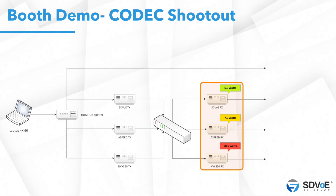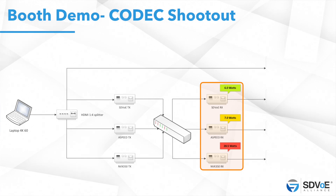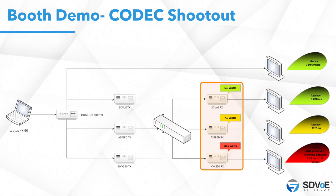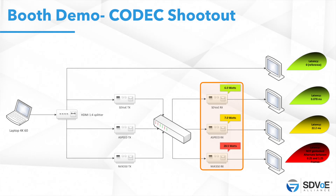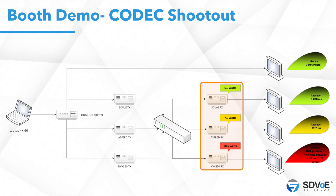We also measured latency for complete encoding. The reference is obviously zero. SDVoE is 0.078 milliseconds, which is blazing fast. For A-Speed, it's much more — 22.2 milliseconds. And Crestron is not a genlock solution, so they have not been capable of reestablishing the source timing at the screen. Their latency varies between a quarter of a frame and one and a quarter frames, and when it's too much, they skip a frame or repeat a frame, introducing yet another artifact.